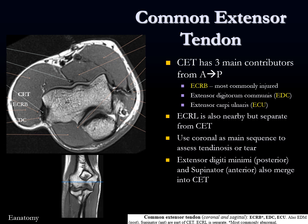On axial images, here's the common extensor tendon origin showing the ECRB and EDC. The ECU would also be nearby. Not as important for routine reading to say what each individual structure is, but just know that the common extensor tendon origin is at the lateral epicondyle, and you can reference what exactly those tendons are as needed.